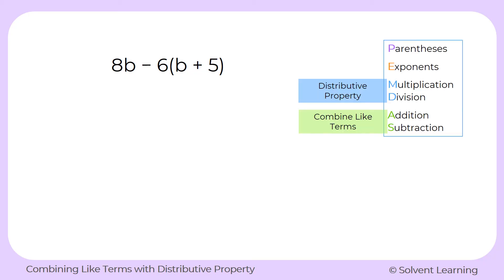Remember, when we use the distributive property, we're not breaking the rules of the order of operations — we're still following the proper order. It's just that now, since we have some variables in here, we have to use these specific methods. The distributive property gets done first before combining like terms, because we always have to do multiplication before we add and subtract. So we're still following the proper order.